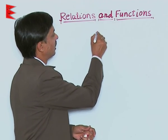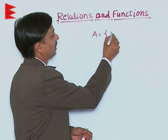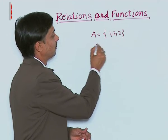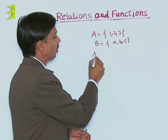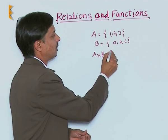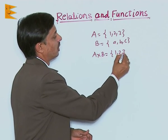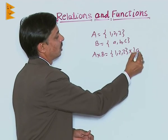To understand it, if there is a set A having the elements 1, 2, 3, another is B with elements A, B, C. If we go to find A cross B, we will say it is 1, 2, 3 cross A, B, C.